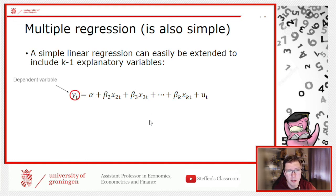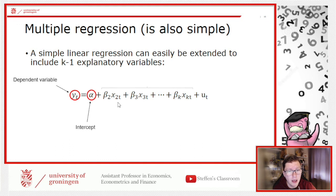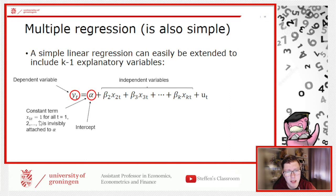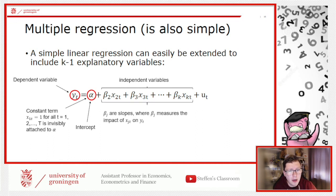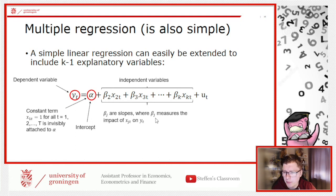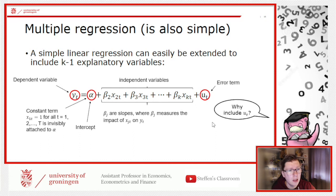In multiple regression, we have our dependent variable on the left-hand side, an intercept, and independent variables X2 through Xk. The constant term has an X1 attached but since it equals one for all observations it's essentially invisible. Each beta coefficient measures the impact on Y of the corresponding independent variable — the slope for each characteristic we're relating to the dependent variable.